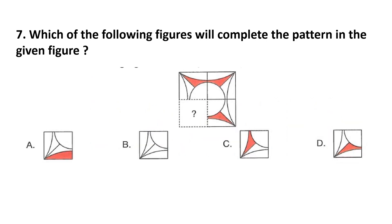Question number 7. Which of the following figures will complete the pattern in the given figure? We have to find what will come at the question mark. In option A, the shape of the red part is different, so A can't be the answer. In option B, it is totally white, but in the given figure half the part is red and half is white, so B is cancelled. In option C, if we add it, it will be a mirror image. So the answer is option D — the red part will come here and complete the pattern.